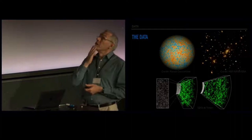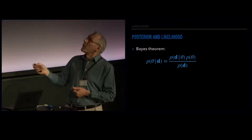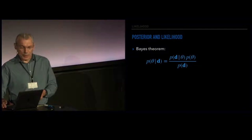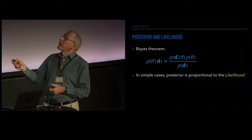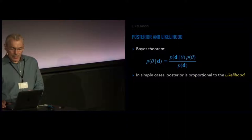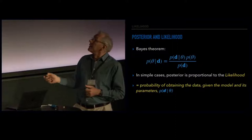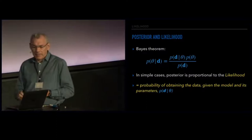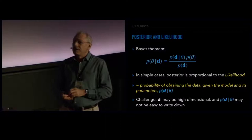The posterior, using Bayes' theorem, can be written in terms of the likelihood — the probability of getting the data given the parameters — times the prior on the parameters, divided by the evidence, which for parameter inference is just a normalizing constant and not important. In very simple cases the posterior is just proportional to the likelihood, assuming uniform priors. The challenge, which is really a theme of my talk, is that these probability distributions are typically very high-dimensional things, and that gives us enormous challenges.